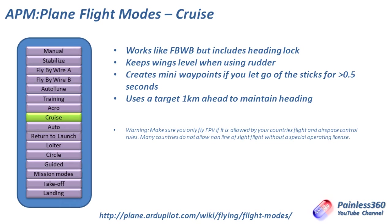Next is cruise mode, which does require GPS. It works like fly-by-wire B but also has a heading lock. It keeps the wings level when using the rudder and creates mini waypoints — every time you take your fingers off the controls for about half a second, it creates an imaginary waypoint about a kilometre in front and uses that to maintain the heading. It's nice for FPV — you can stick it in a direction, and as long as the elevator is in the middle it won't try to sink or rise, it will maintain the same height and direction, sorting out wing level when you use rudder to turn.